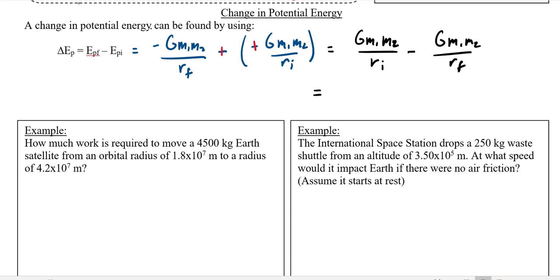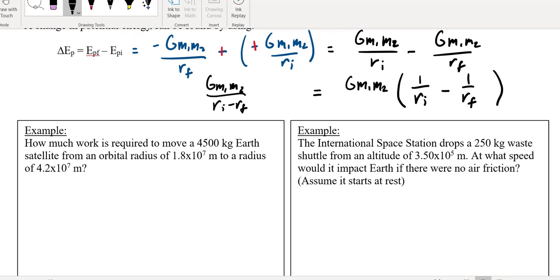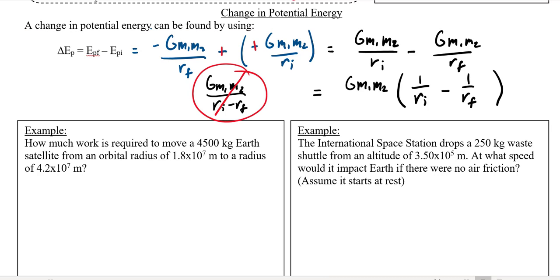This can be simplified again, because I don't want to punch all that into my calculator. I could take out a common factor of GM₁M₂, and what I'd be left with is 1 over r_initial minus 1 over r_final. I just want to point out that it is really tempting to think that this is the same thing as GM₁M₂ over (r_initial minus r_final). That is a giant no-no — that is not the same thing. You need to take the inverse of the initial and the inverse of the final and then subtract them.